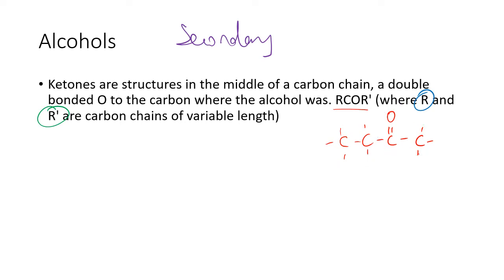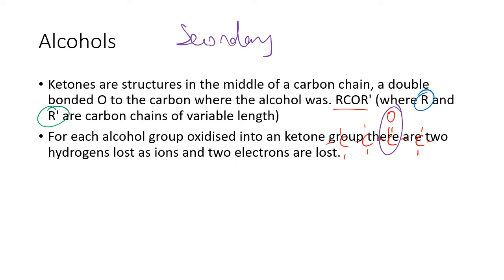This is the ketone group here in the middle, wherever the alcohol was. So if we were looking at this one here, this would have come from 2-butanol because the ketone group is on the second carbon of a four chain, where the alcohol would have been. For each alcohol group oxidized, there are two hydrogens lost and two electrons lost, very similar to the oxidation of primary alcohols.